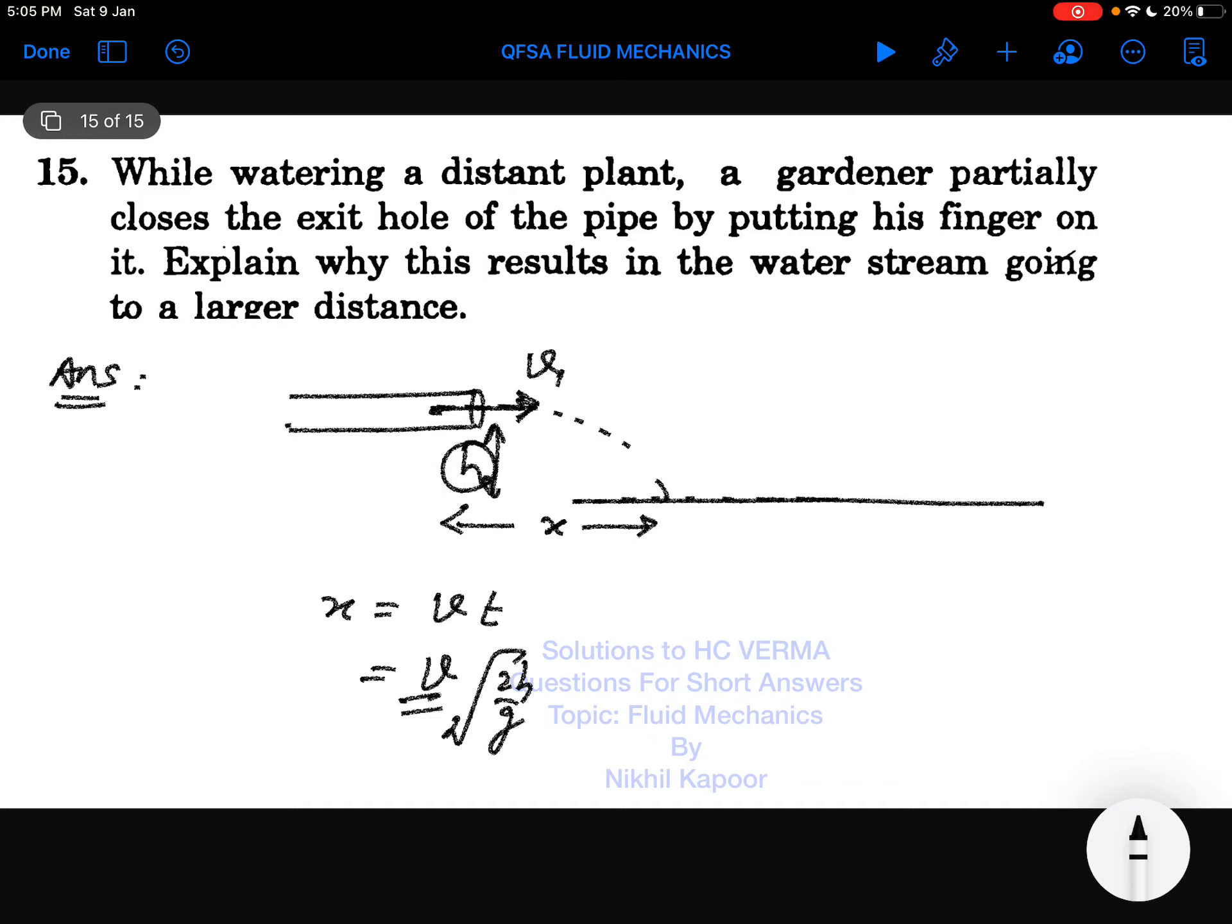Now if the gardener partially closes the opening, then according to the equation of continuity, when area of cross-section was A1 and velocity is v1, now the area of cross-section is A2 so velocity would be v2. We know that A1v1 must be equal to A2v2. As the area of cross-section is decreased, the velocity has to be increased.